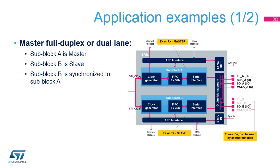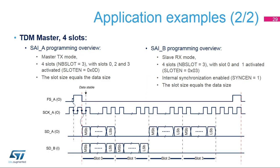For a full duplex master mode, two data lines are needed, so two sub-blocks need to be used. The master sub-block A provides the synchronization to the slave sub-block B using the internal synchronization feature or I/O line management. Note that in this example, sub-block B only uses SDB. The amount of I/Os is reduced to its minimum thanks to the internal synchronization. Another kind of full duplex mode uses the TDM protocol. Slot 1 is inactive for sub-block A; slots 2 and 3 are inactive for sub-block B. For both sub-blocks, the frame structure has four slots. Sub-block A will generate three samples per frame, and sub-block B will receive two samples per frame.